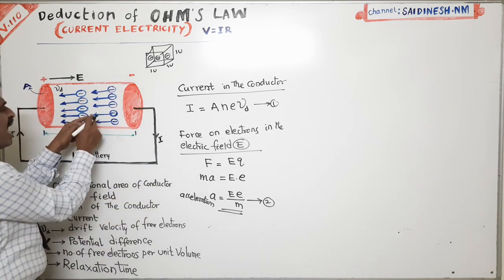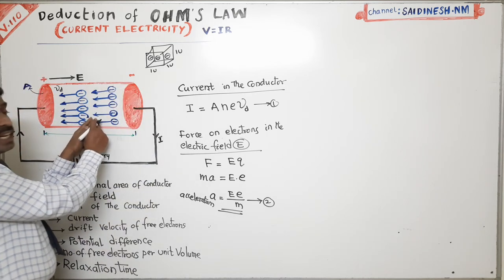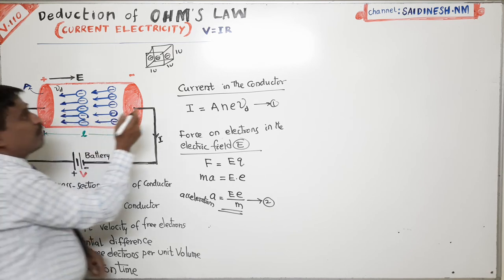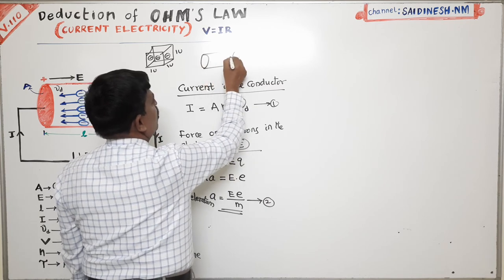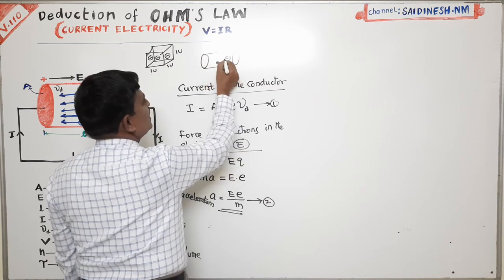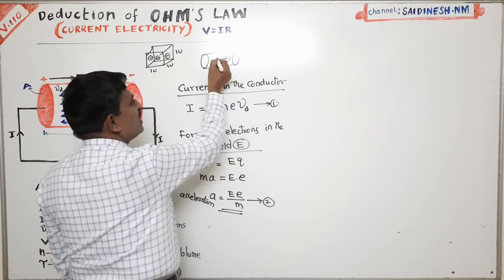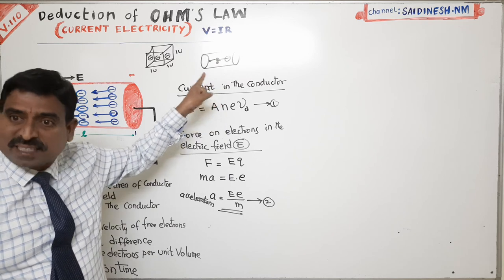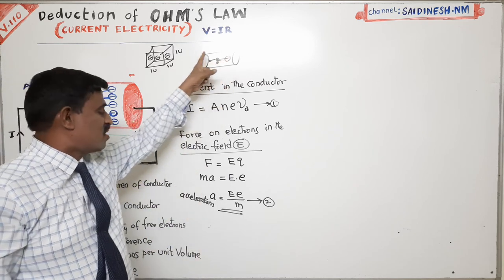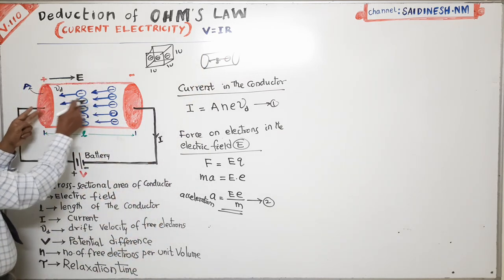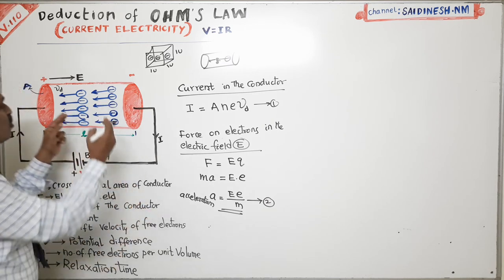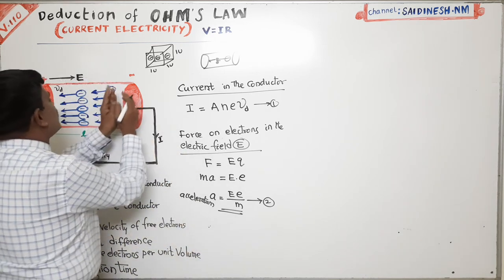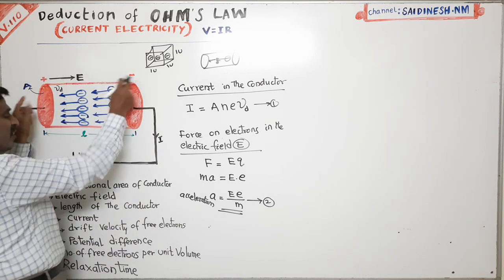These electrons collide with ions inside the metal. After collision, the velocity increases gradually and reaches a maximum, then another collision takes place. The electron moves, collides with a positive ion, stops, then its velocity starts from zero again. After some time, due to the force acting on these electrons, their velocity increases and they accelerate toward the positive end. The final common velocity of all electrons moving in a single direction due to the electric field is called the drift velocity.